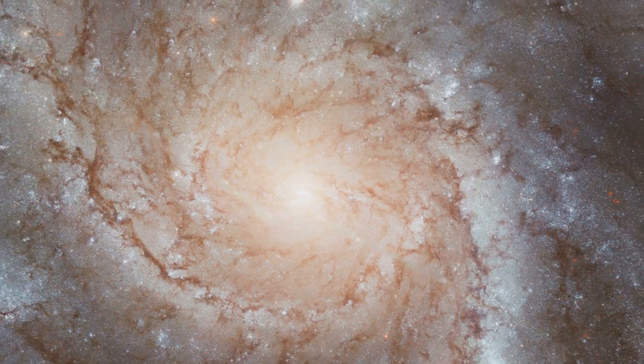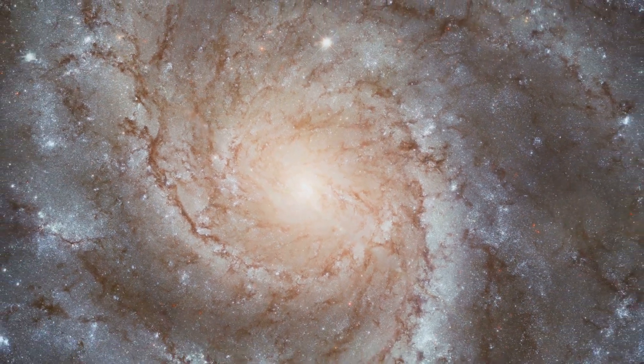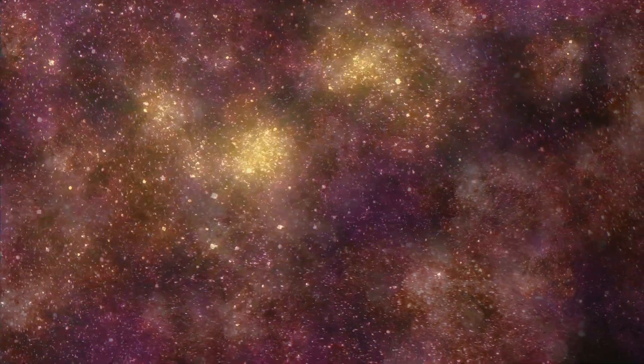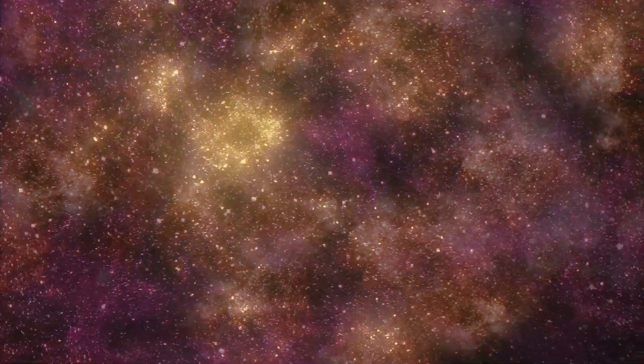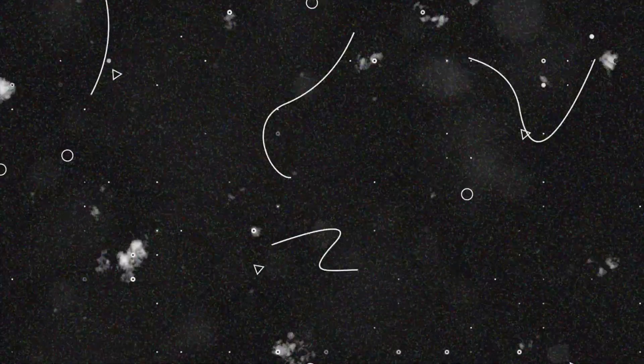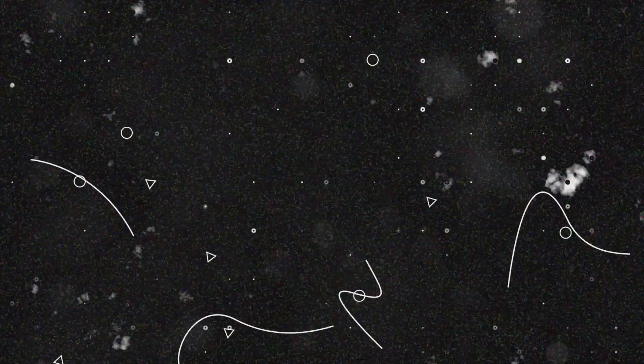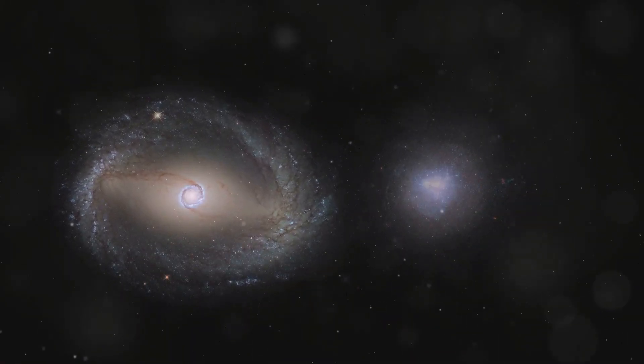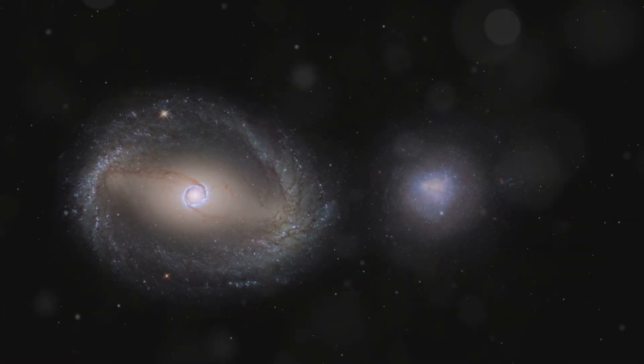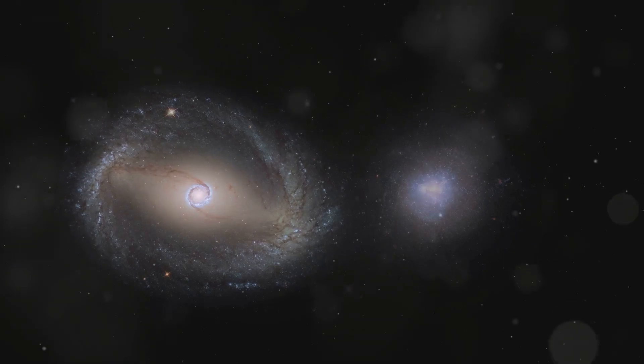Galaxies are rotating far too fast for the amount of visible matter they contain. So what's holding these galaxies together? Enter dark matter. This mysterious substance doesn't emit, absorb, or reflect light, making it invisible to our telescopes. But even though we can't directly observe it, we know dark matter is out there because of its gravitational influence on the visible universe.